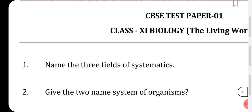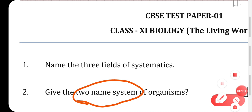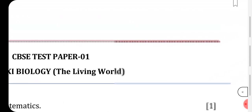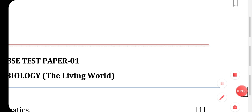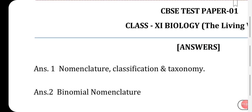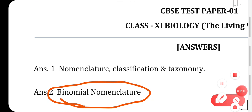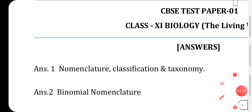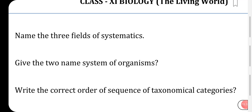The two-name system is a system in which we use two names — genus and species. That naming system is called binomial nomenclature. The two-naming system where we write the genus name followed by the species name is called binomial nomenclature.